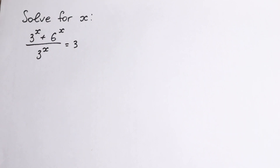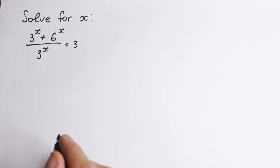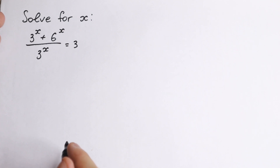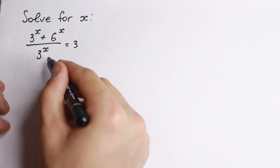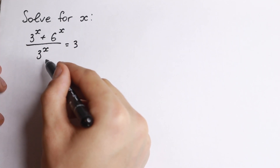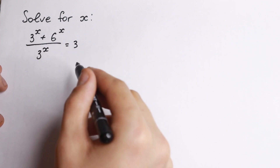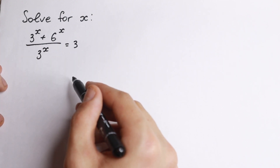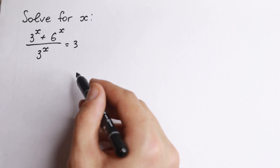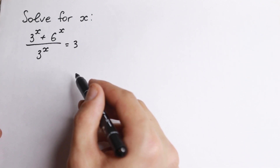Hello my friend, happy to see you here and welcome back to MathMod. Really interesting problem today. We have 3 to the x plus 6 to the x in our numerator and 3 to the x in our denominator equal to 3. I want to show you the two best methods to solve it — there are three methods but I want to show you the two best.